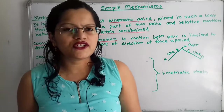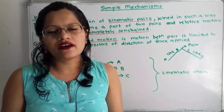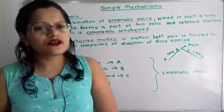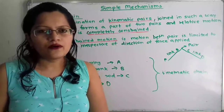The second condition is that each link forms a part of two pairs. Checking whether this condition is satisfied: link AB is part of pair A and pair B; link BC is part of pair B and pair C; link CD is part of pair C and pair D; and link DA is part of pair D and pair A. So we can say this satisfies all the conditions included in the kinematic chain.